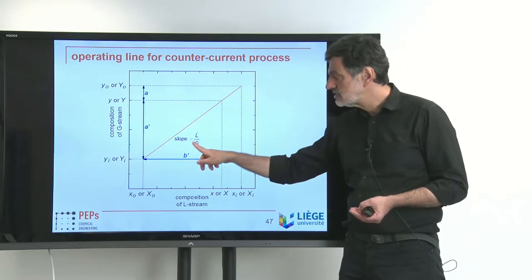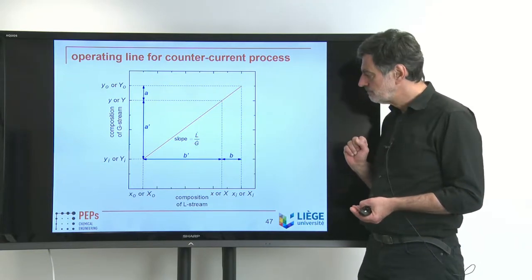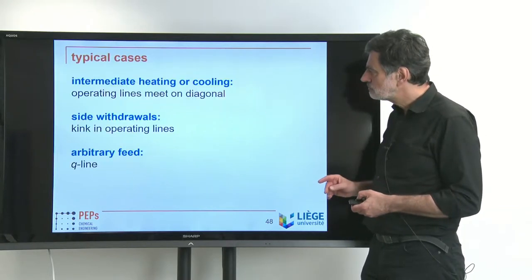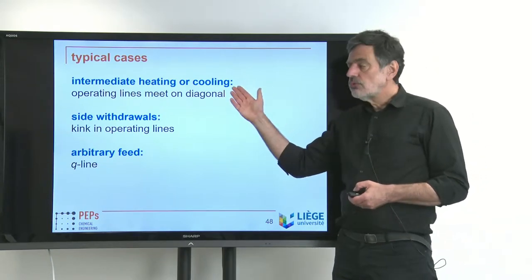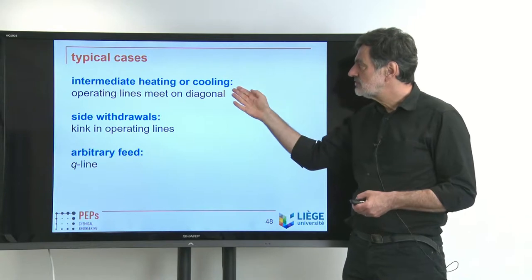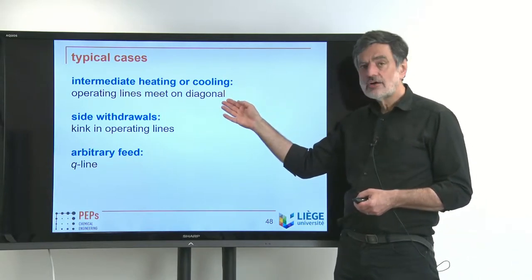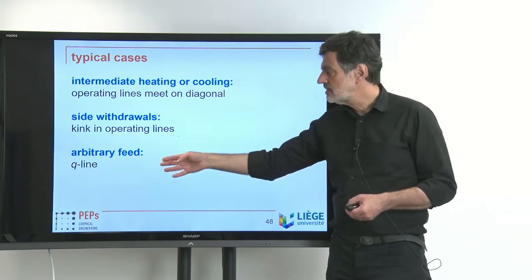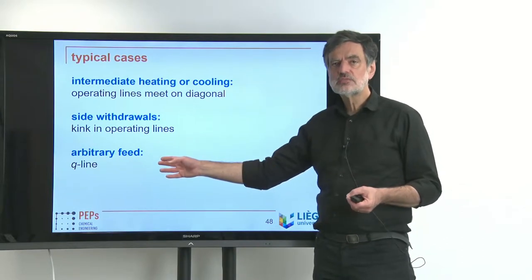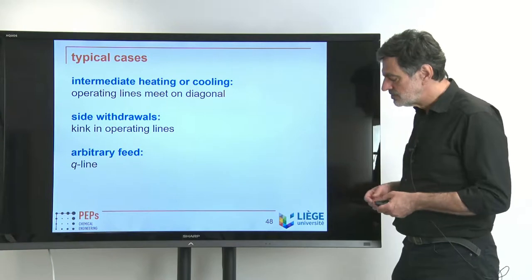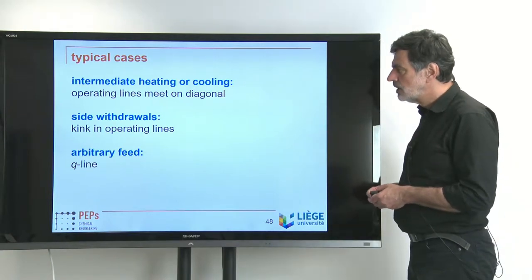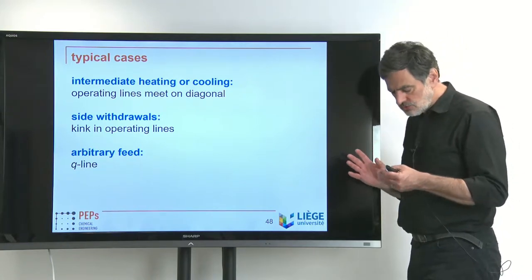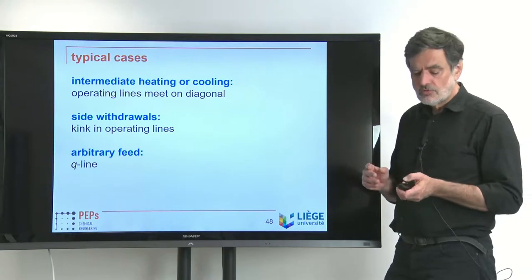There is a one-to-one relation between the compositions of streams that meet in the counter-current process and a point on this line, and the slope always has to correspond to that slope in the column. We realize that for intermediate heating or cooling, the operating lines have to meet on the diagonal. If there is a side withdrawal, there is a kink in the operating lines. And if we have an arbitrary feed, that can be realized by the Q-line construction developed previously. Now we want to apply these general findings to the specific situations for the top and bottom, the reboiler and the condenser of a distillation column.